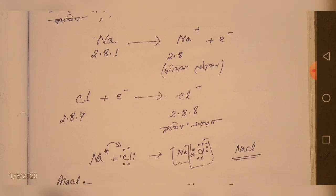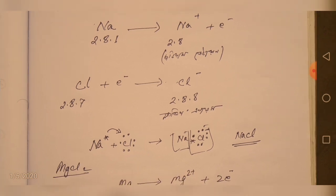The sodium is called a cation. The chlorine is called an anion. Cation means the electron is called positive or plus charge, and anion means the electron is called minus. In sodium chloride, the electron is transferred to chlorine.